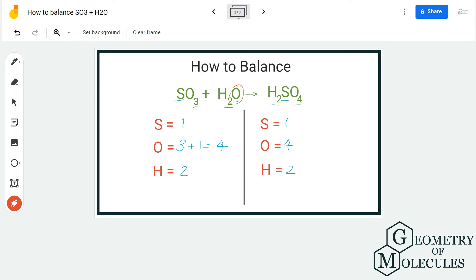Make sure to count the number of oxygen atoms and hydrogen atoms on both sides to not miss out on any atom. So this is the balanced equation for SO3 and H2O and I hope this video helps you to understand it better.